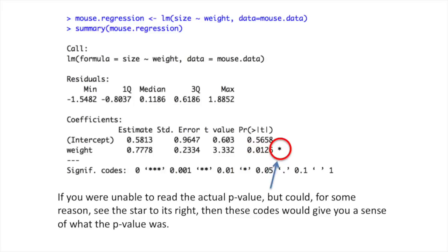If you were unable to read the actual p-value, but could, for some reason, see the star to its right, then these codes would give you a sense of what the p-value was.